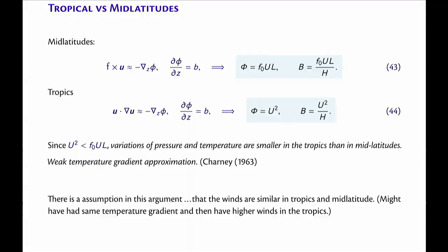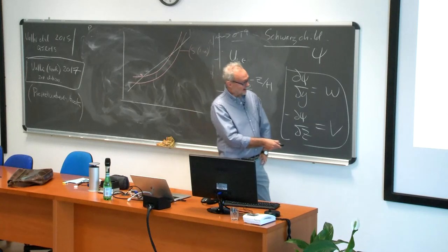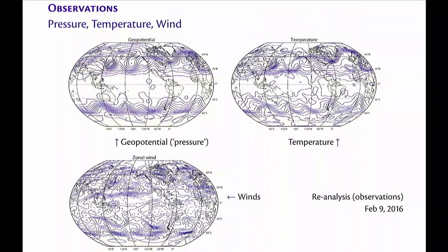Here is a snapshot of pressure, temperature, and wind — geopotential and wind on a particular day. There's a nice blocking high over the UK. Look at the geopotential: there's almost no gradient of pressure in the tropics compared to mid-latitudes. The same number of contours is used in each plot, so we're not deceiving you. There's a lot of variability of the winds, but very little variability of the geopotential and temperature in the tropics. That confirms the weak temperature gradient approximation.